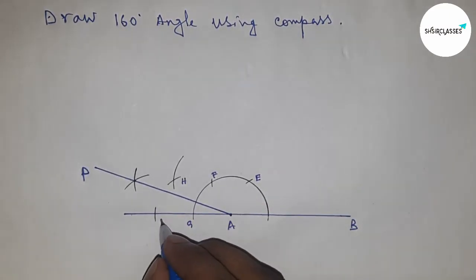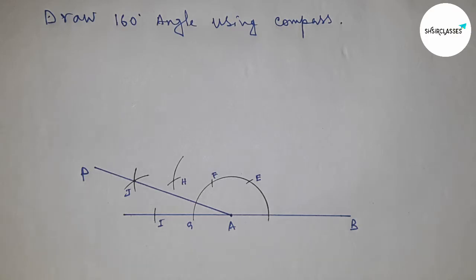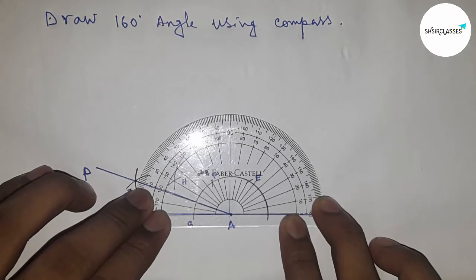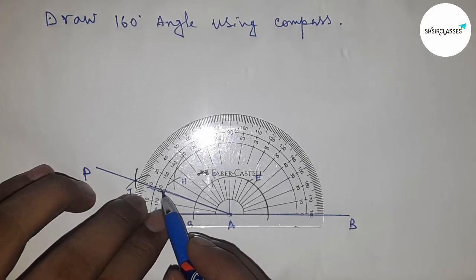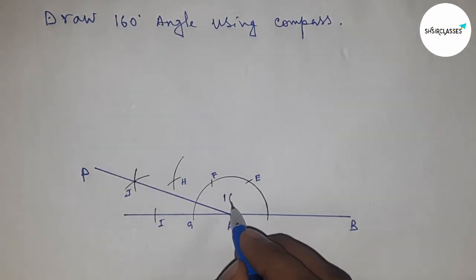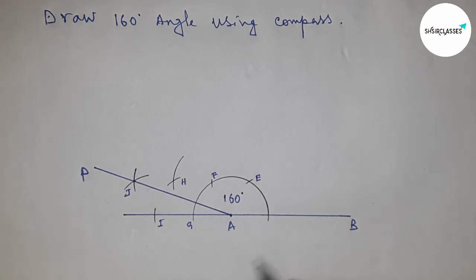Let's check. This is perfectly a 160 degree angle. So angle PAB equals 160 degrees.